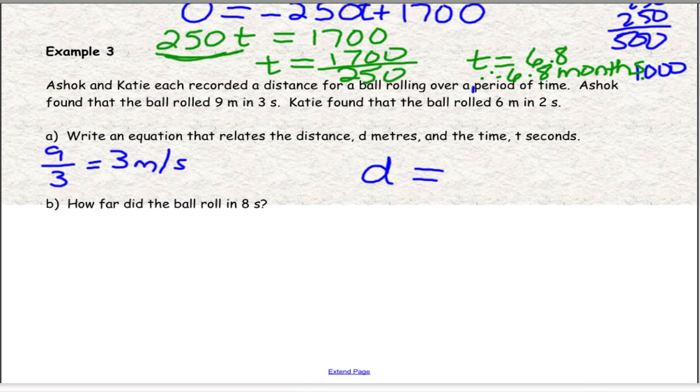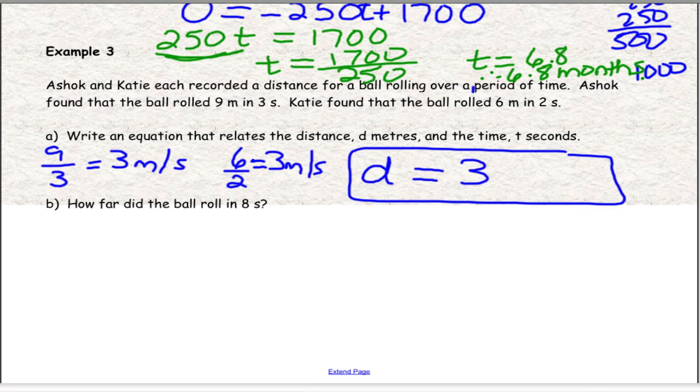What about Katie? Katie said the ball rolled 6 meters in 2 seconds. If I take 6 and divide it by 2, I also get 3 meters per second. So the ball is rolling at 3 meters per second, and that is the rate. So we have our equation here. D equals the rate with a variable or a letter beside it, and it's in time in seconds.